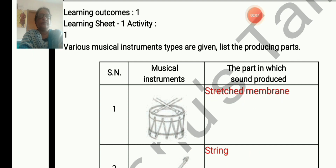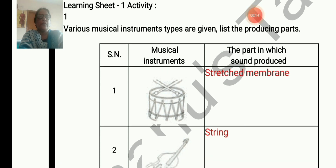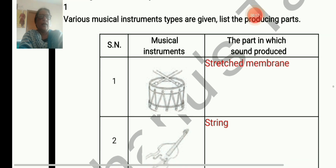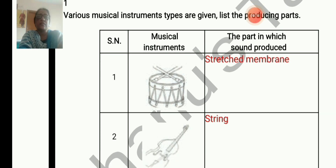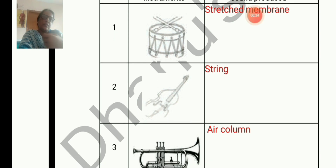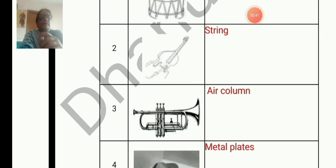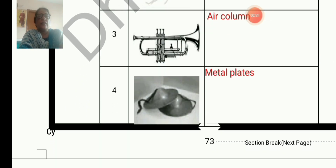You can observe the picture — various musical instruments are shown here. We have to list the sound-producing parts. The first musical instrument is a drum, and the part in which sound is produced is a stretched membrane. If we beat upon the drum head, it will produce sound. The next one is a guitar — when we pluck the string, it will vibrate and we will get the sound. This is a trumpet, and the sound-producing part is the air column.